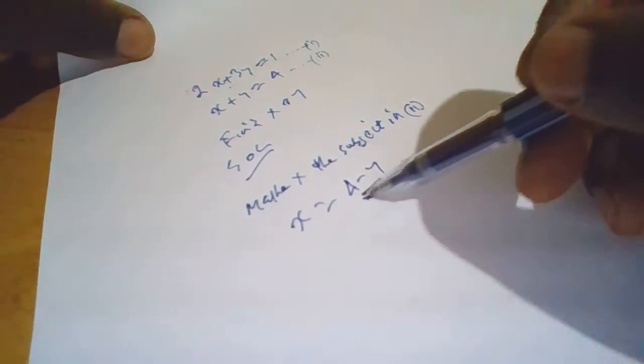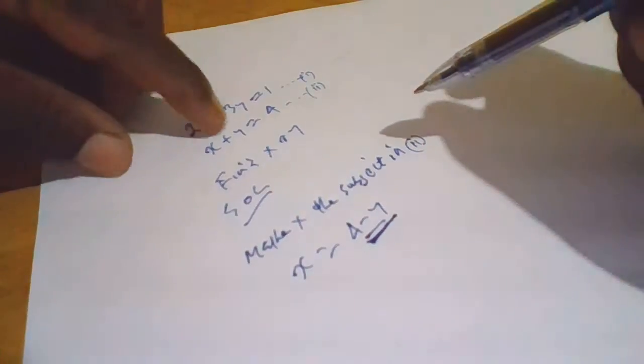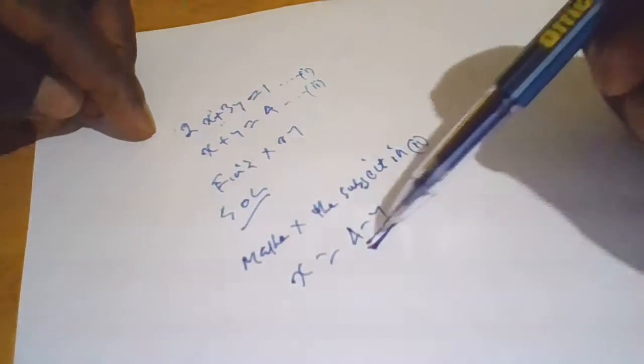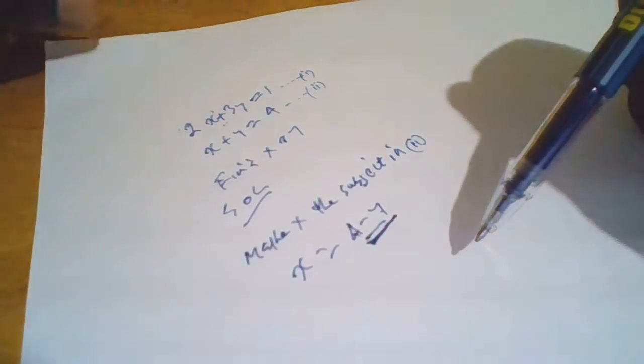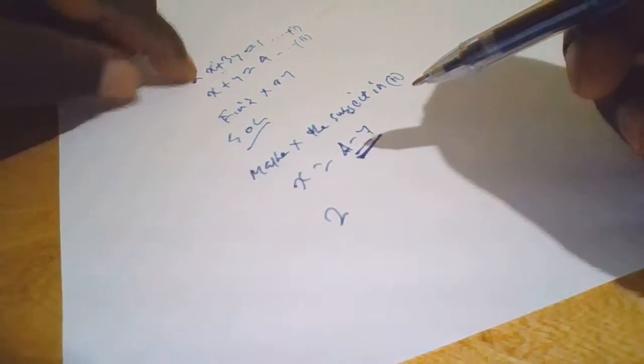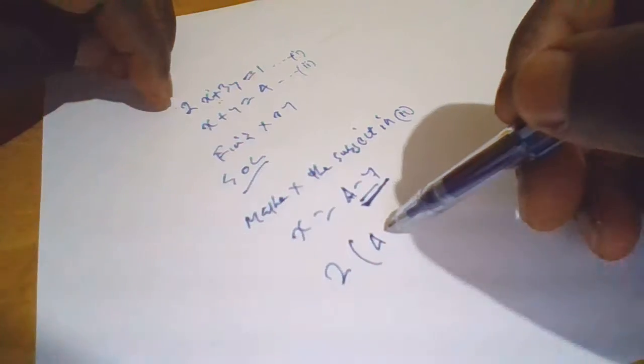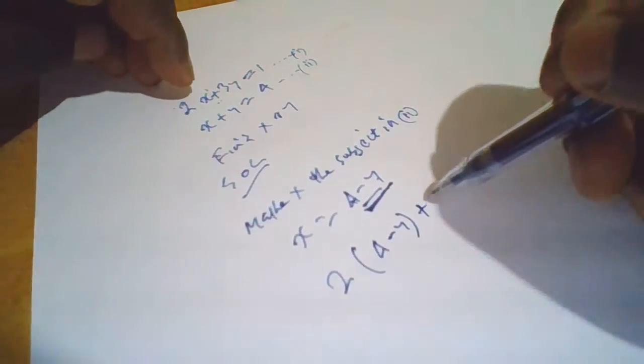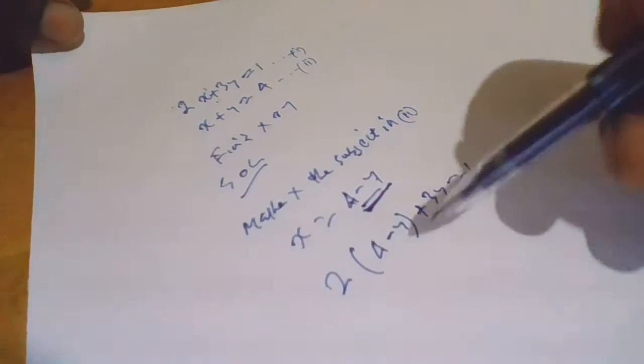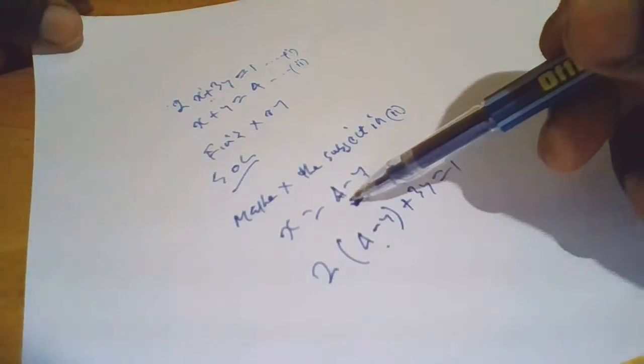So this is the value of x. So where there is x in the first equation, which is this one, we replace where there is x by 4 minus y. Therefore what we are saying is 2 times x is 4 minus y, plus 3y equals 1. So we have replaced the value of x in the first equation by 4 minus y.